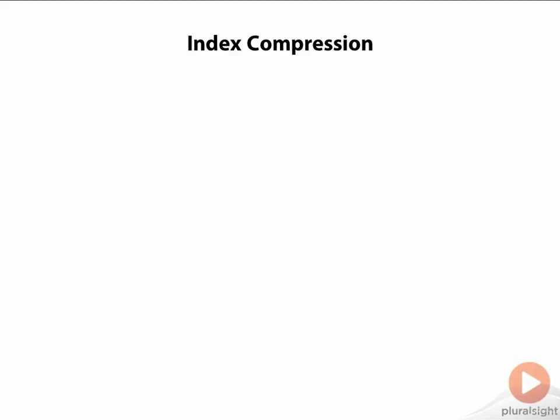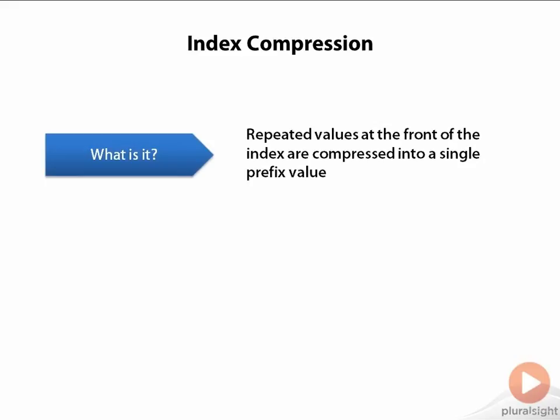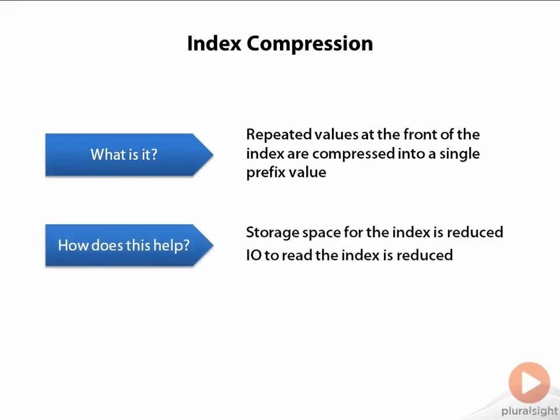Index compression is another technique that can help you not just to save storage space on your database server, but can also in many cases provide a performance boost to your SQL statements. In a compressed index, what Oracle does is take repeated values at the front of the index key and compress them into a single prefix value. So if you were to look in the leaf blocks of a compressed index, you wouldn't see the repeated value over and over again, but a prefix value that mapped to the repeated value that Oracle could look up when needed. How this helps from a performance standpoint is that the index can take up significantly less space on disk, meaning the amount of I/O needed to read the index is reduced, and when we reduce I/O, we usually have a corresponding performance improvement.